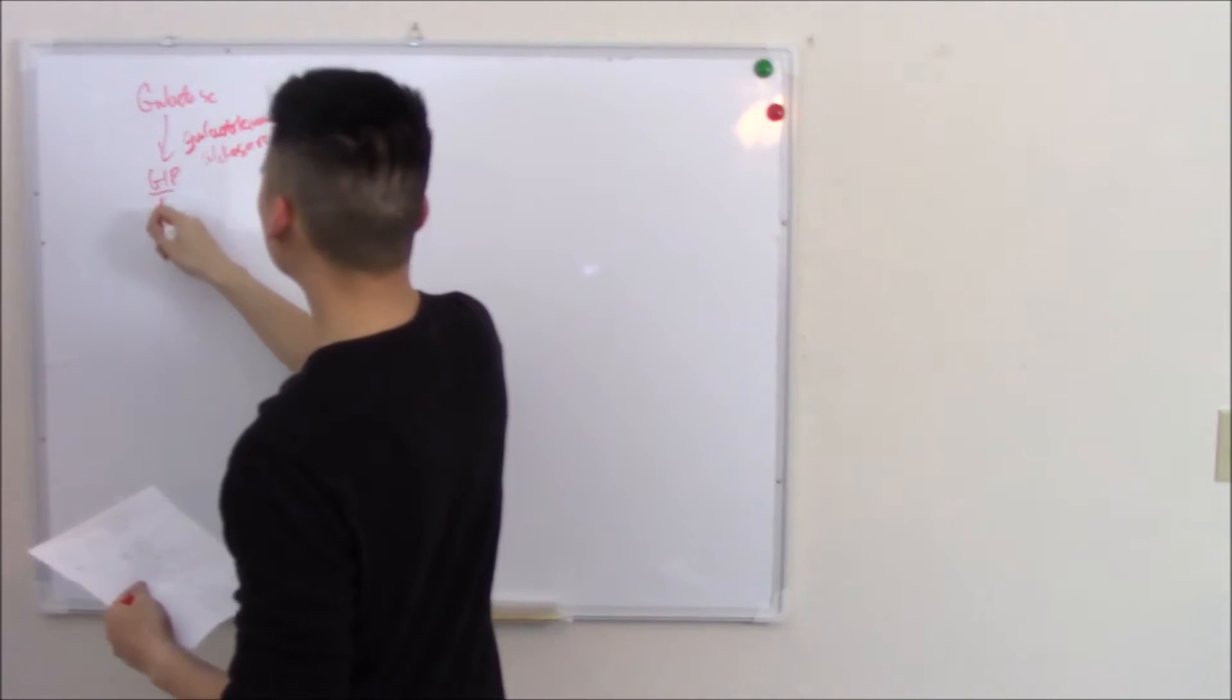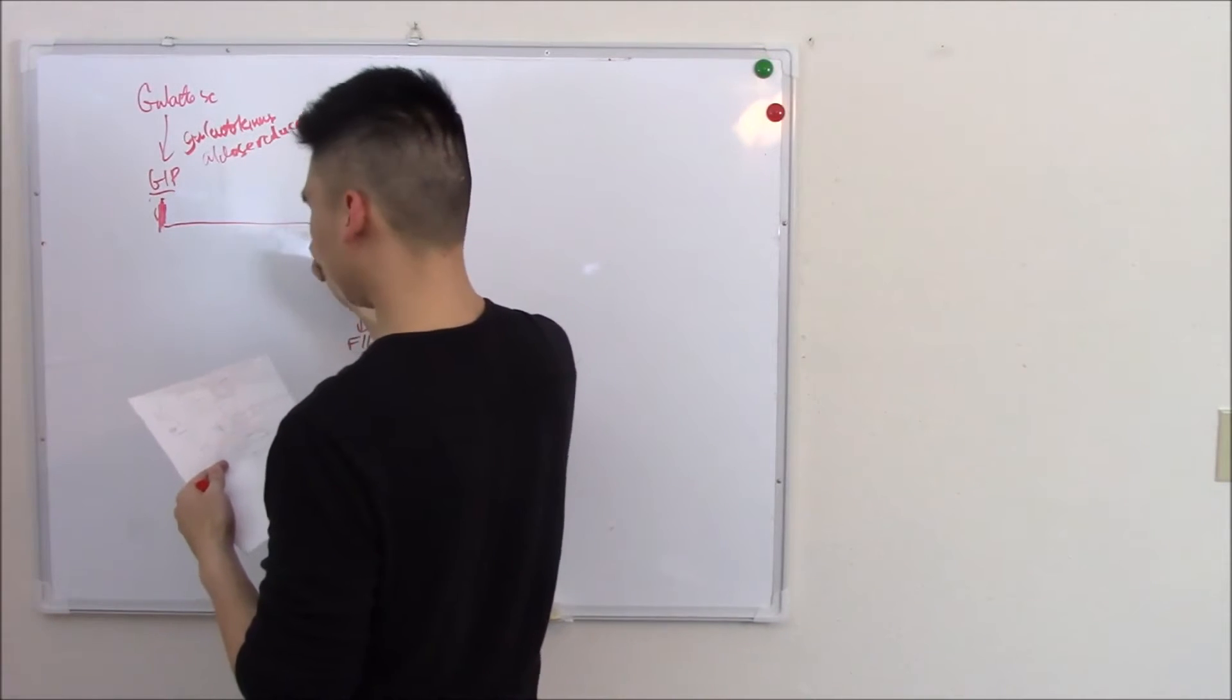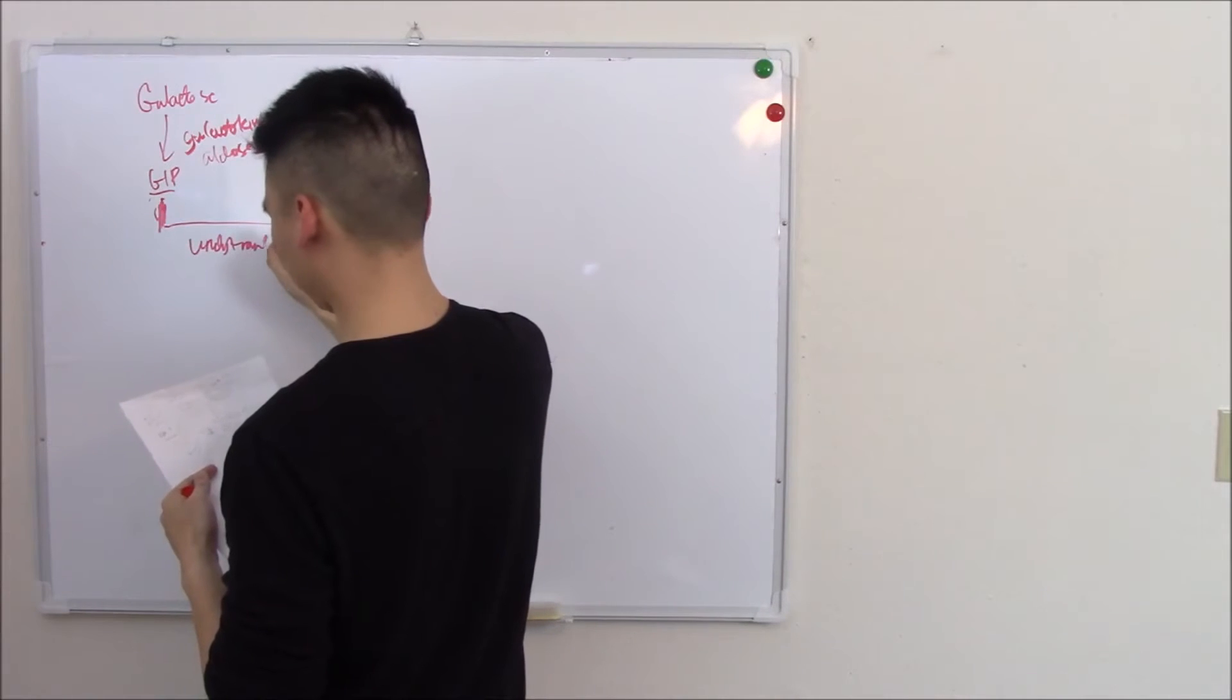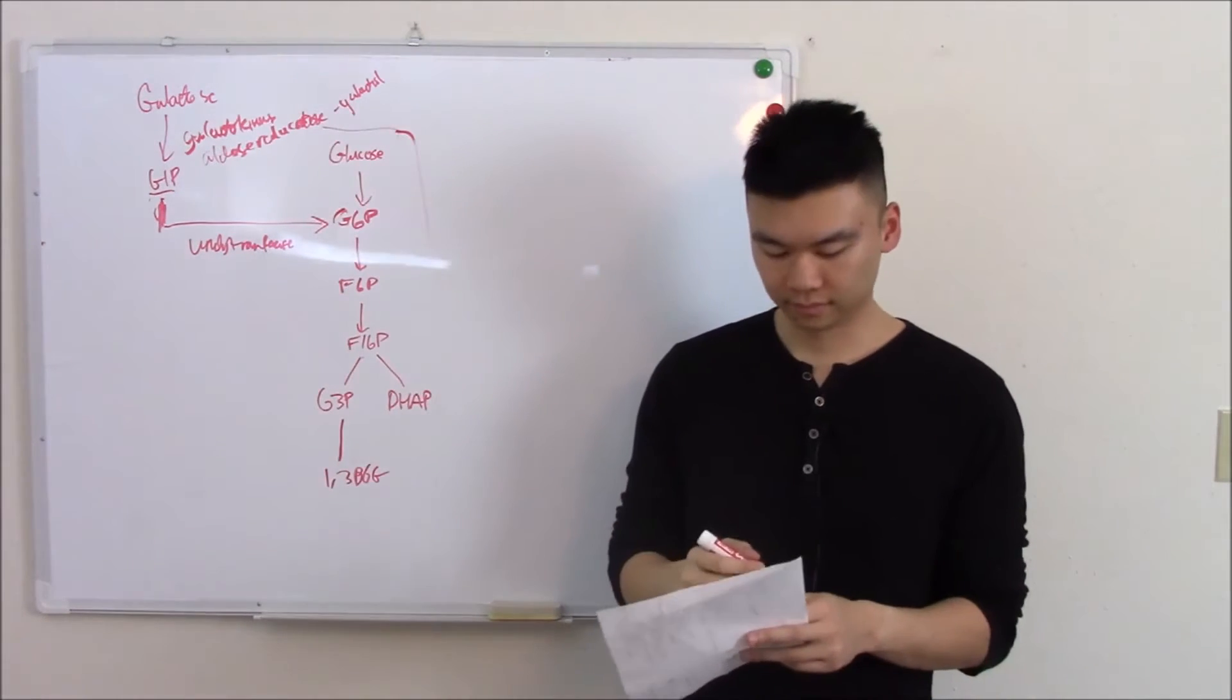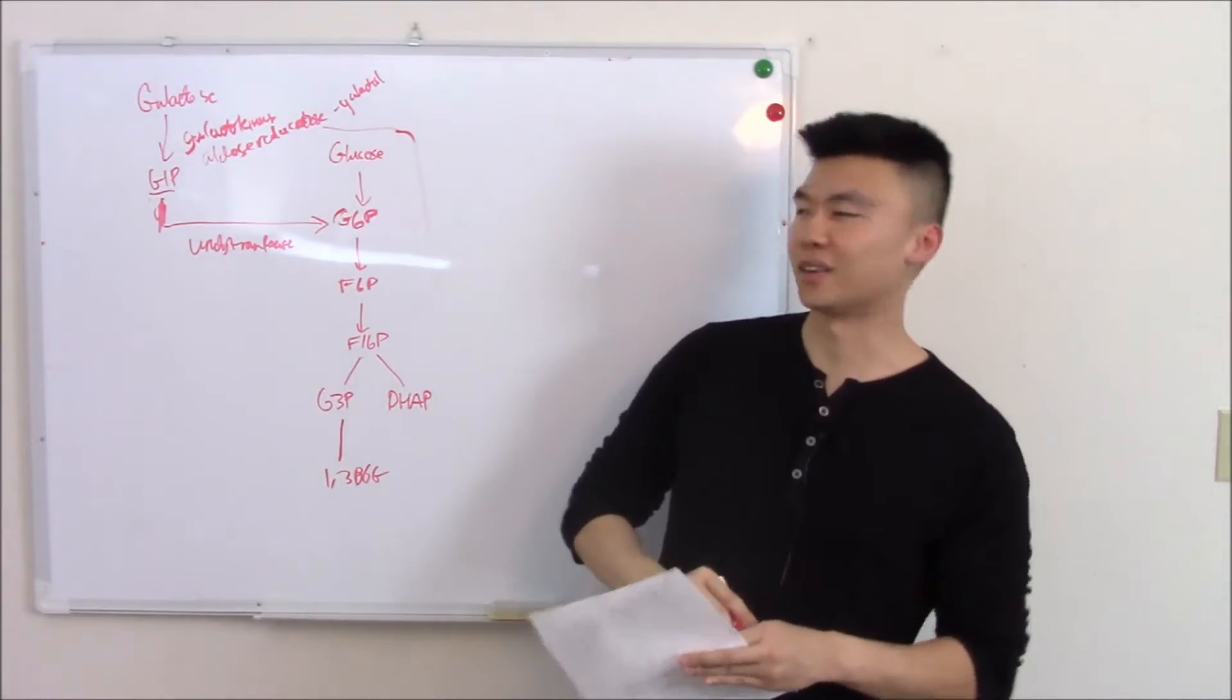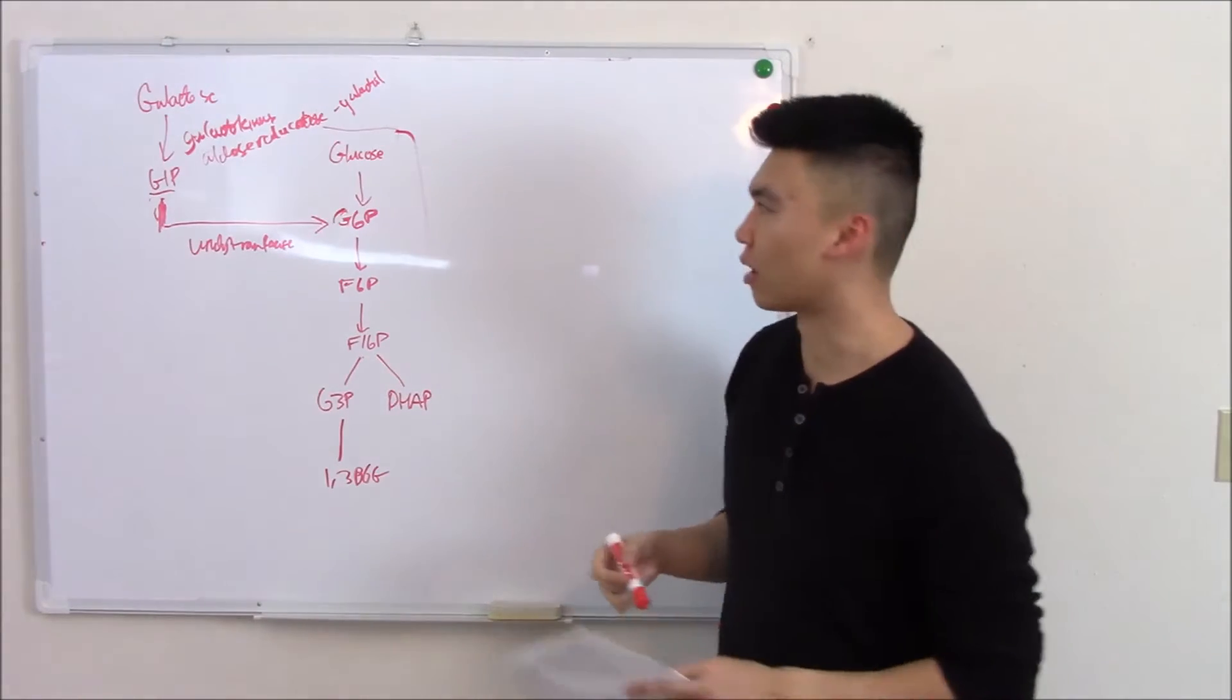Now you have G1P and that re-enters the cycle via uridyl transferase. That's it. That's how it works. Now again, as clinicians we're not really concerned about how it works normally. We're more concerned about when it can go wrong. So let's see how it can go wrong.